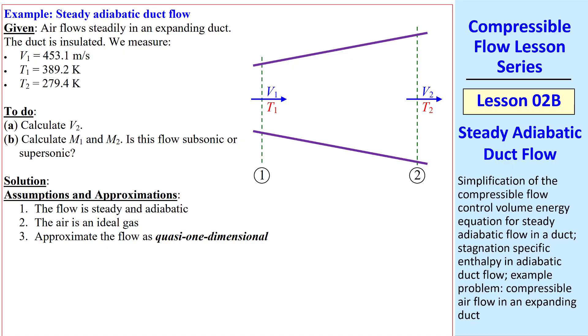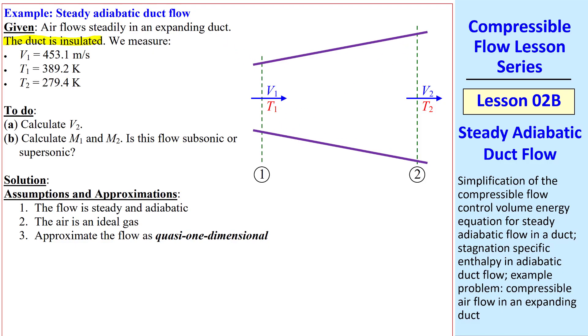Let's do an example problem of steady adiabatic duct flow. Air flows in an expanding duct, as we show here. The duct is insulated. We assume perfect insulation, which means no heat transfer, and thus adiabatic conditions. We measure V1, T1, and T2, and we want to calculate V2 at the outlet. We also want to calculate M1 and M2, and then determine if this flow is subsonic or supersonic.